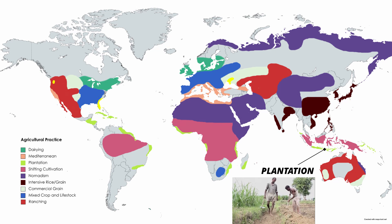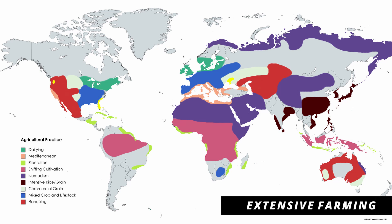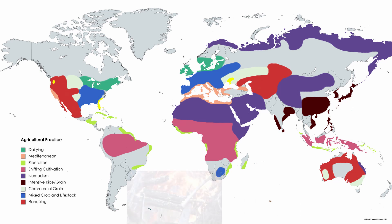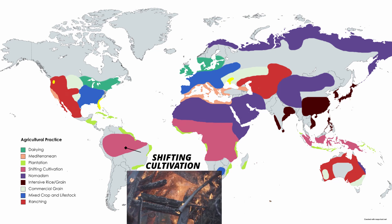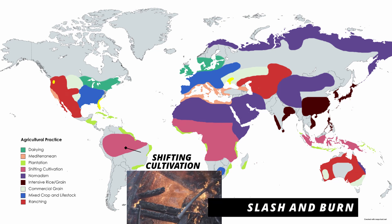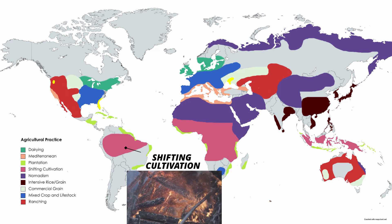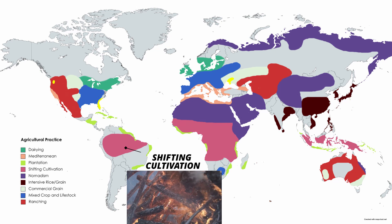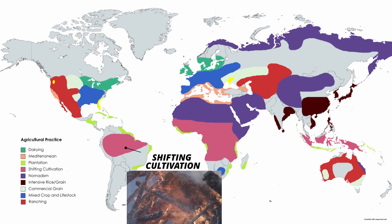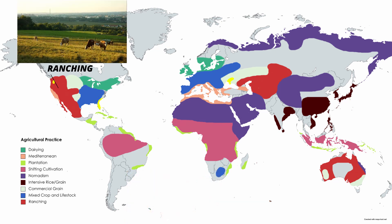Then we have plantation agriculture, which you see in areas that have been affected by colonialism. Then we have extensive farming methods, which generally take up large plots of land, starting with shifting cultivation. A specific form of shifting cultivation is slash and burn agriculture, where you burn an area, cultivate, rinse and repeat — generally seen in underdeveloped countries and not environmentally friendly in any way, shape, or form. We also have ranching, which needs quite a bit of land, as cattle need sufficient space to roam about. You'll see ranching and dairying near each other for obvious reasons, and they're mostly in cooler, more temperate regions.